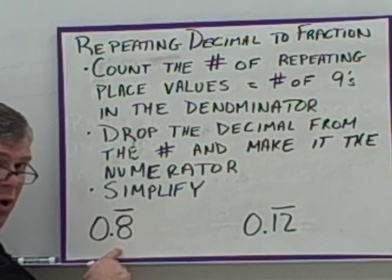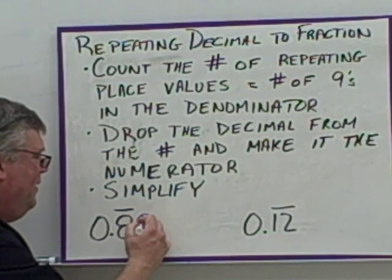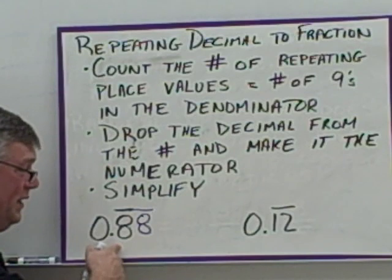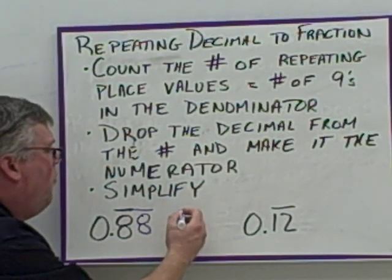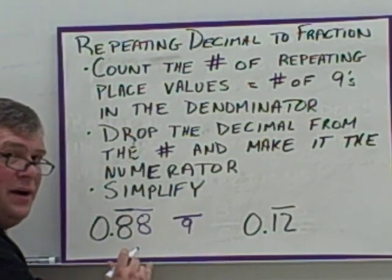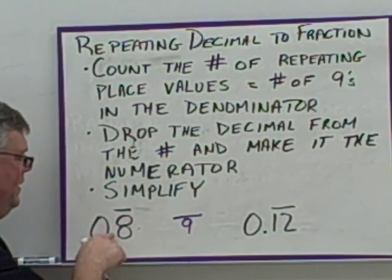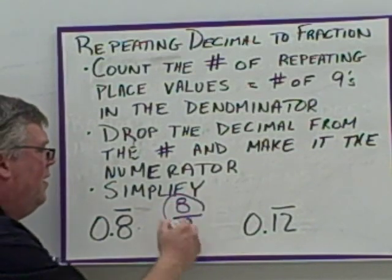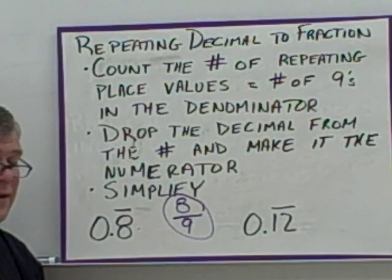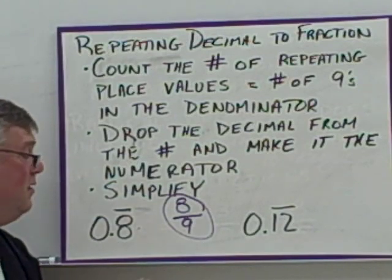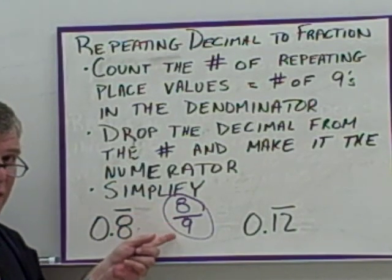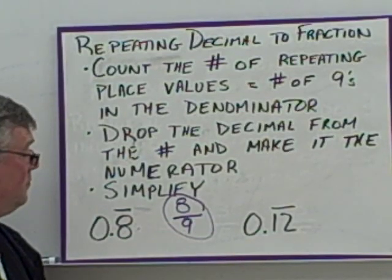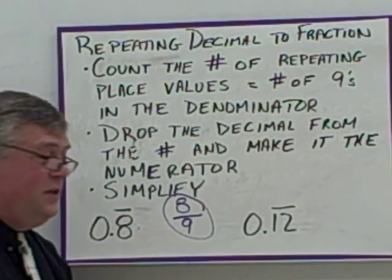Here we have one place value repeating — the eight is the only thing repeating. So we're going to have one nine on the bottom. We get rid of the decimal point and put the 8 on top: eight ninths. 8/9 equals 0.8 repeating. To check it, go to your calculator, divide the top by the bottom, and you'll get 0.8888. It doesn't hurt to double check.